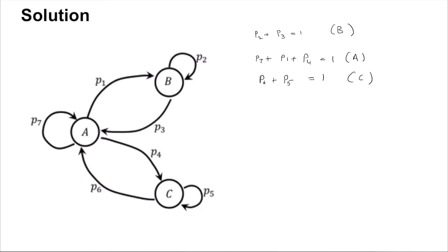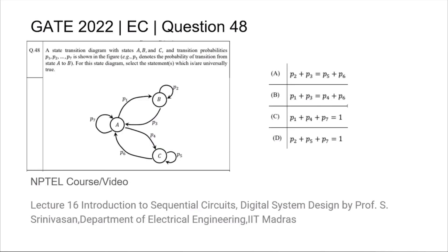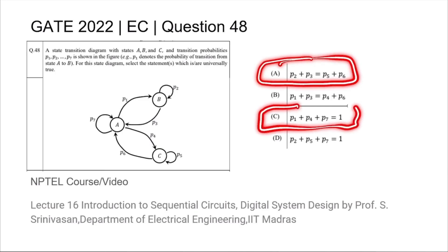Immediately, you will notice that P2 plus P3 is equal to P6 plus P5. This is option A, and so option A is correct. You will notice that this is option C, and so option C is correct. Thus, the correct options are A and C.